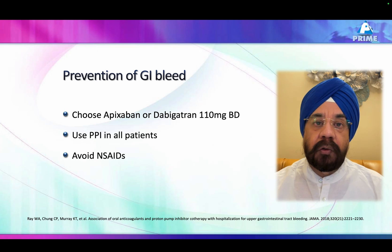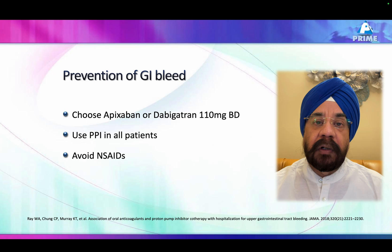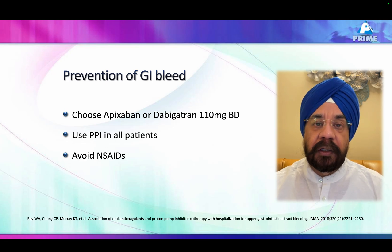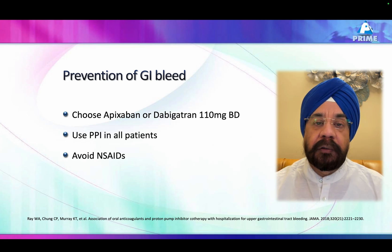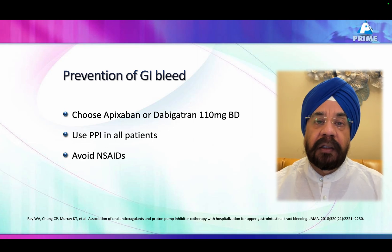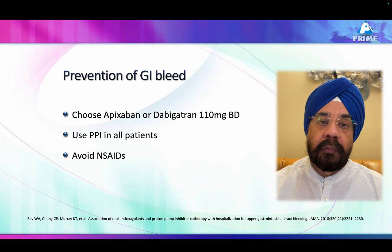If you have a patient with risk of GI bleed, you must use a PPI, must not use NSAIDs, and aspirin and clopidogrel should never be used. You can choose apixaban, or dabigatran at a lower dose.